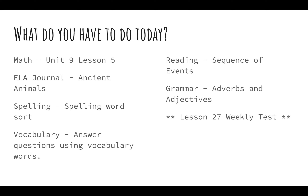What do you have to do today? Today you have a math activity, Unit 9, Lesson 5. Then for ELA Journal, you have a little bit of drawing and writing about ancient animals, or how you learn about ancient animals. Then you have a spelling activity — you will be doing a spelling word sort.